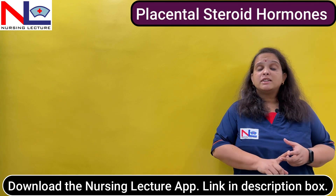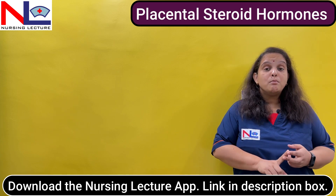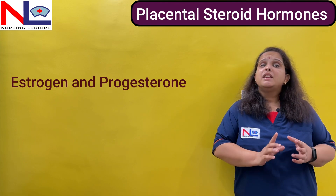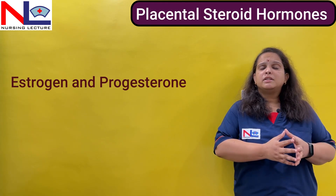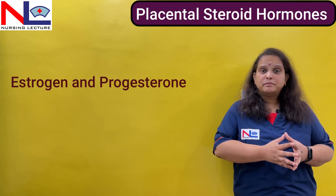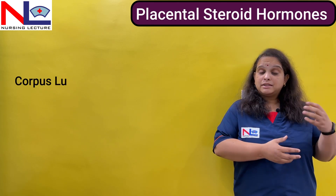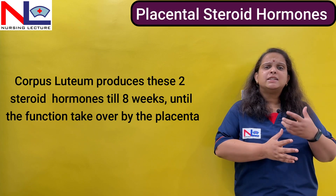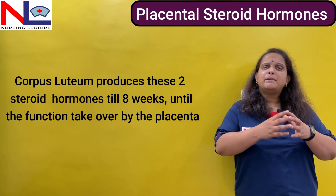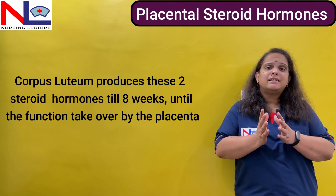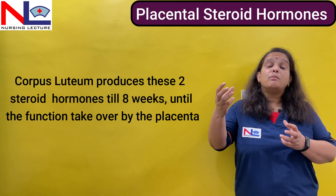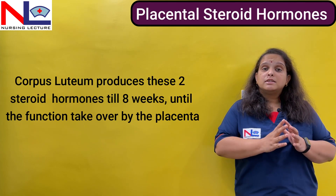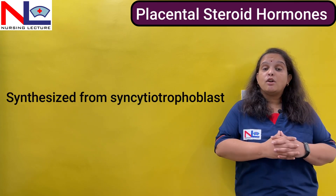The most important steroid hormones which are very important to maintain the pregnancy are estrogen and progesterone. These hormones are usually produced through the corpus luteum once pregnancy is conceived, but after eight weeks of gestation the placenta starts forming these steroid hormones. Progressively they produce the hormone, and once the pregnancy reaches term they synthesize more of these hormones. Mainly these two hormones are synthesized from the syncytiotrophoblastic lining of the placenta.